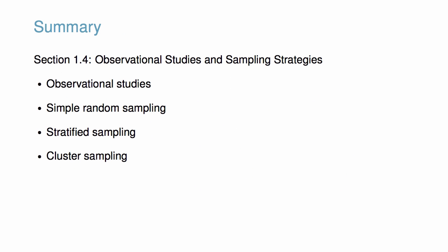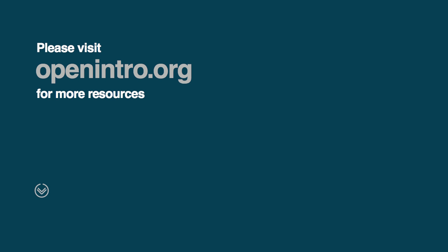In this video, we learned about two types of observational studies and three types of sampling, including simple random sampling, stratified sampling, and cluster sampling. If you learned something you found interesting, share this video with a friend and visit openintro.org for more resources.